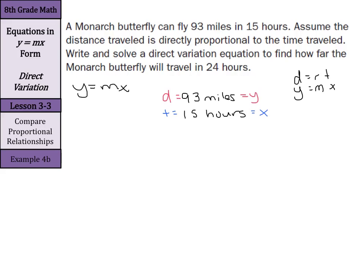So when I go to make this substitution into y equals mx, I'm going to say 93 for y equals m, that's what I'm looking for, times 15. Now simplify this by dividing by 15 on both sides. And 93 divided by 15 is 6.2. So 6.2 equals m.